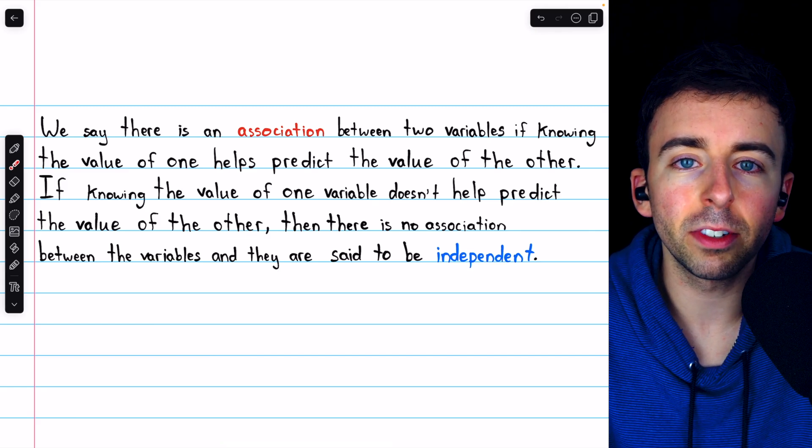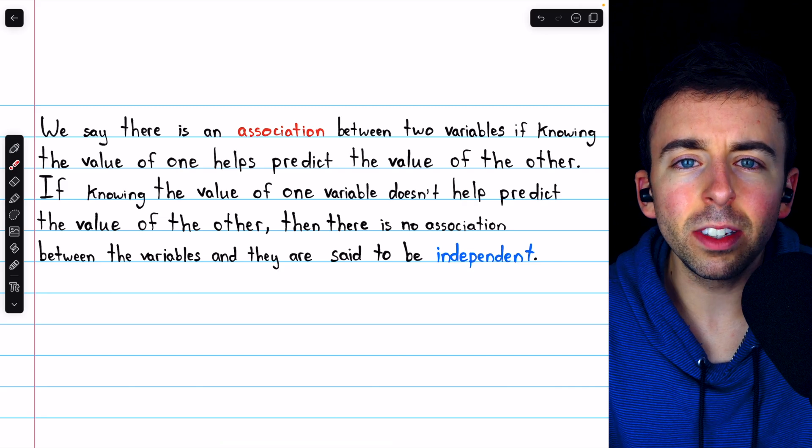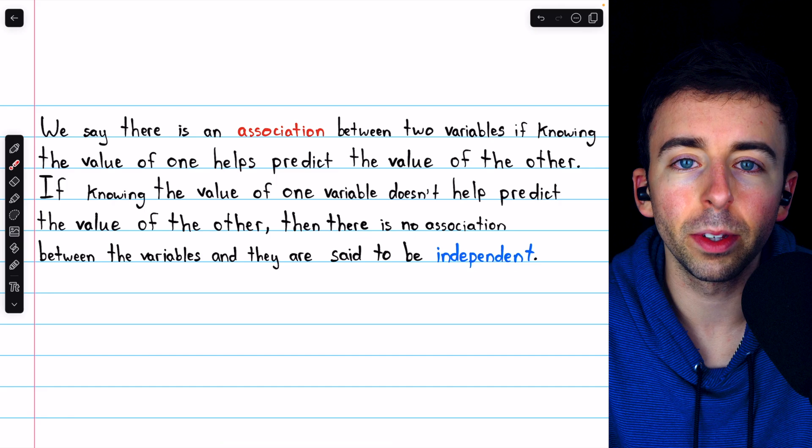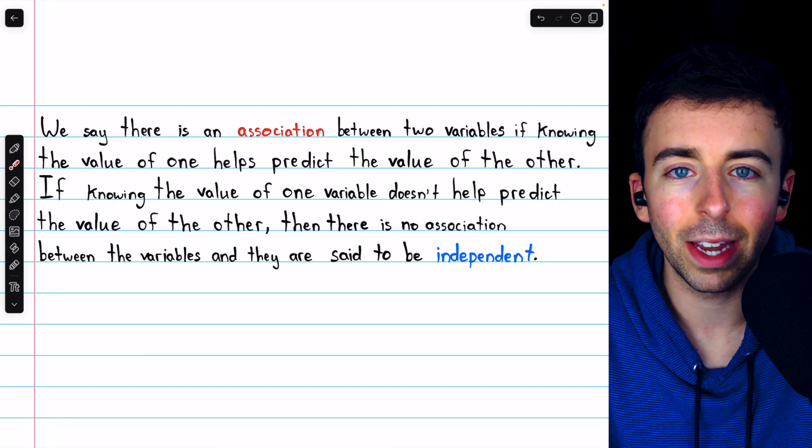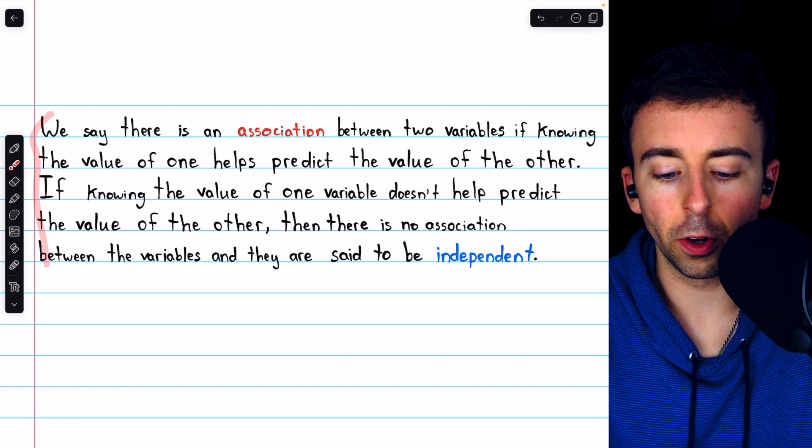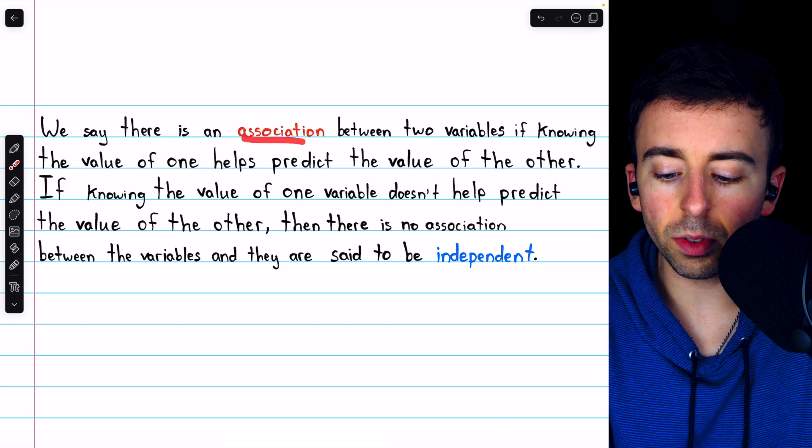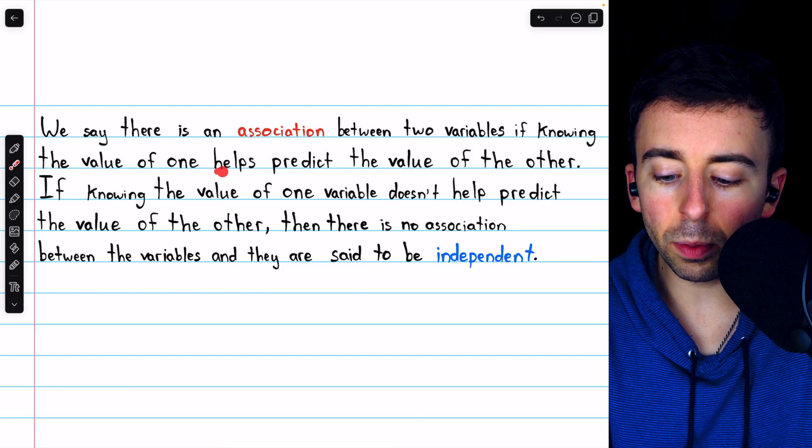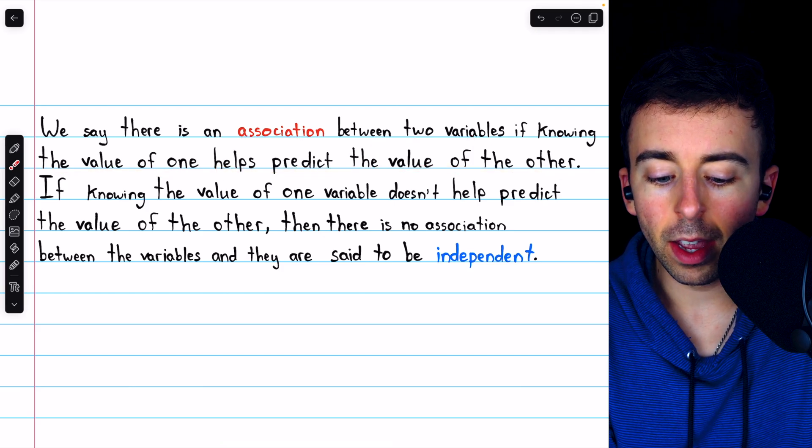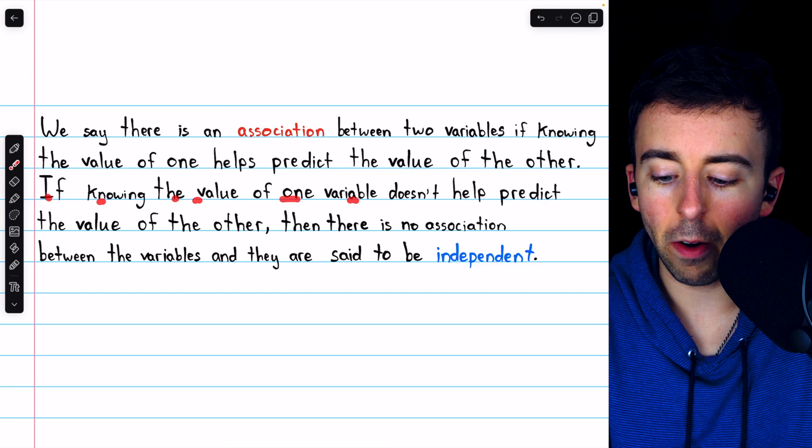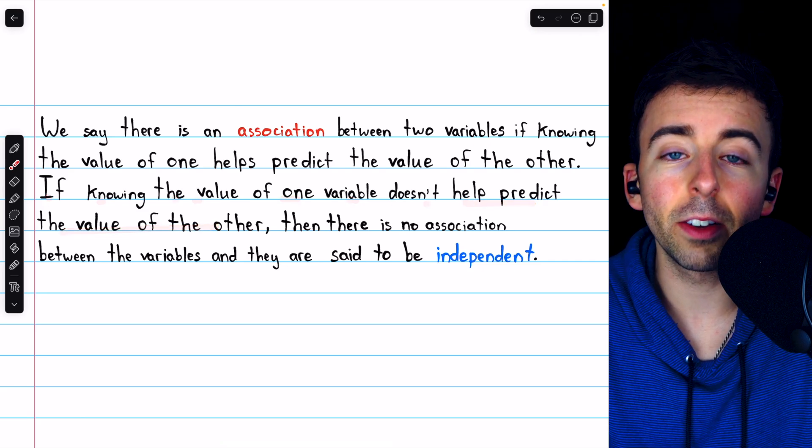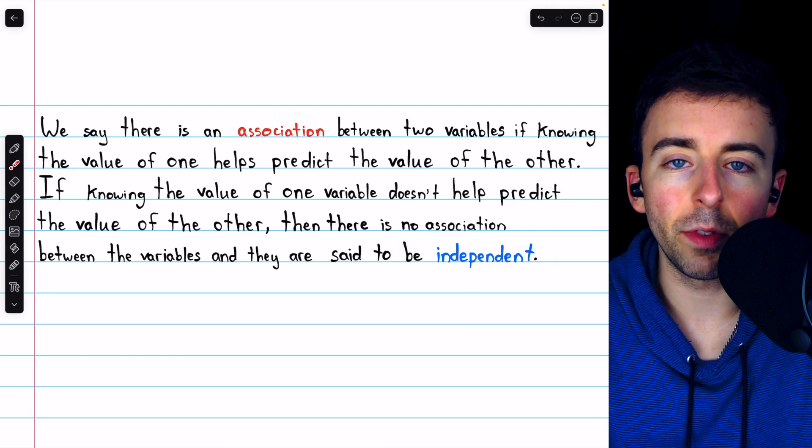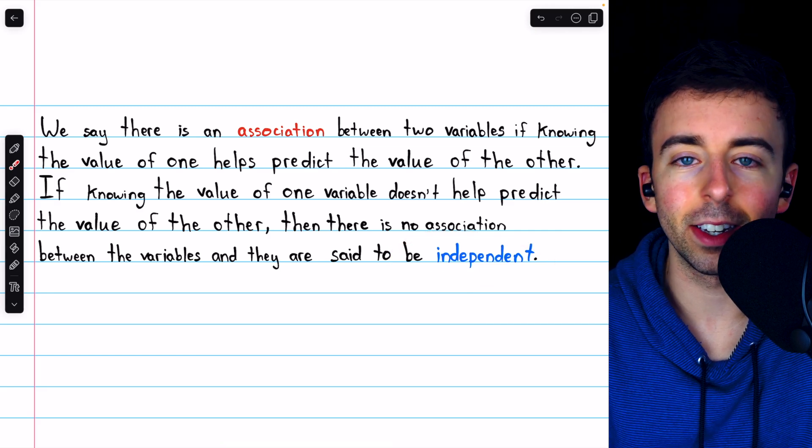We'll cover what it means for categorical variables to be independent, and how to determine these things with data and with charts, whether or not two variables are associated or if they're independent. We say there's an association between two variables if knowing the value of one helps predict the value of the other. If knowing the value of one variable doesn't help predict the value of the other, then there isn't an association between them, and we call them independent variables.